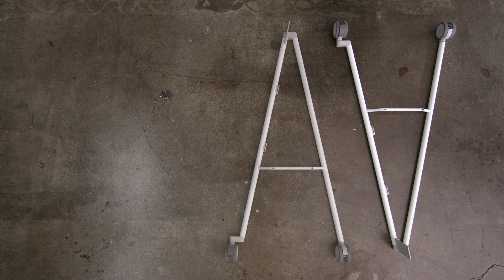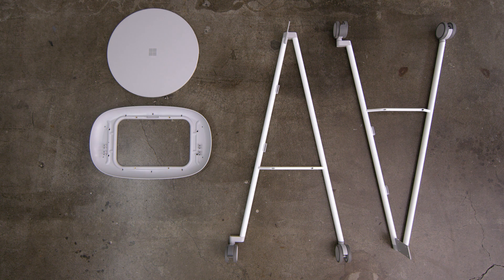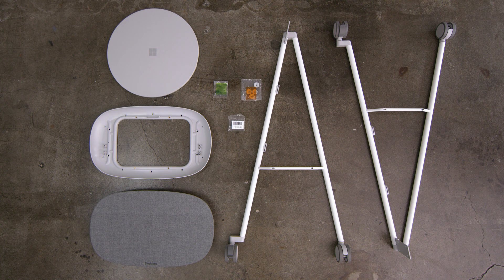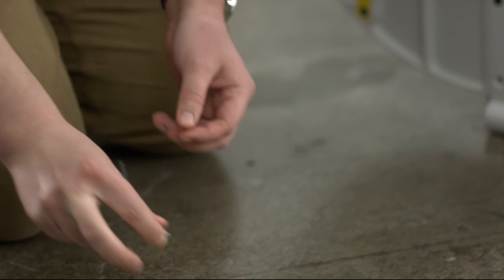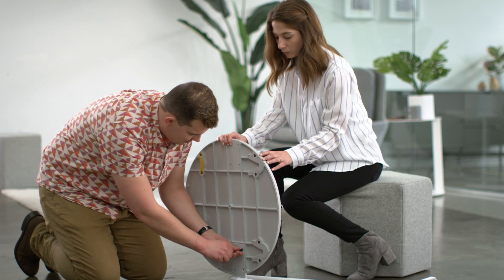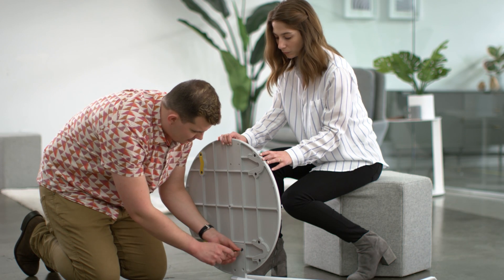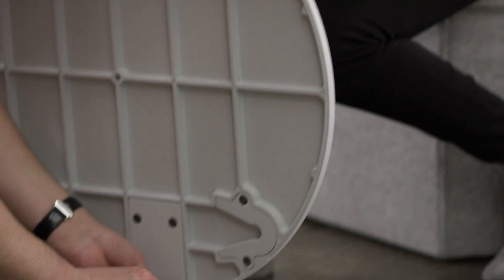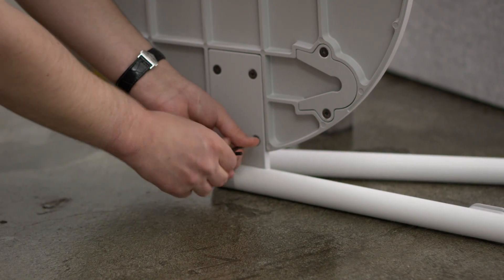To start assembling the Steelcase Rome mobile stand, begin by removing all the components from the box. Begin by opening the green bag and then attach the mounting plate to the first leg. Ensure that you attach the bracket on the leg to the correct side of the mounting plate.